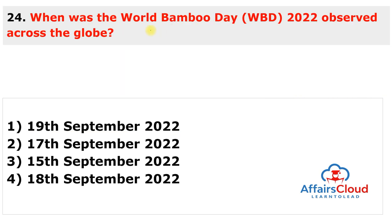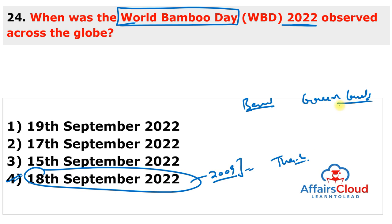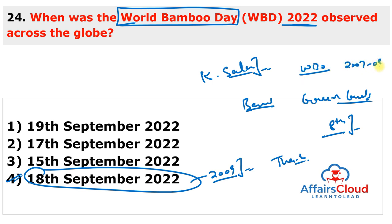World Bamboo Day 2022 was observed on 18th September 2022 to create awareness about bamboo, which is considered 'green gold.' The first Bamboo Day was observed in 2009 on 18th September in Thailand, during the 8th World Bamboo Congress, initiated by Kamlesh Salim from Assam during his tenure as president of the World Bamboo Organization from 2007 to 2009. The 18th September is also celebrated as Royal Thai Forestry Day.